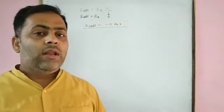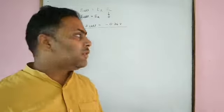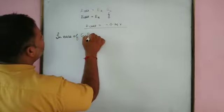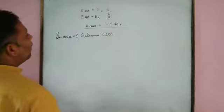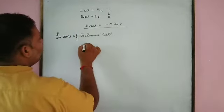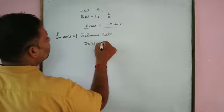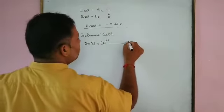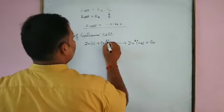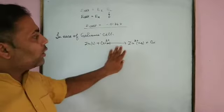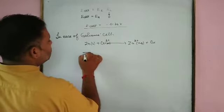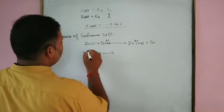In the case of the galvanic cell, the overall reaction is: Zn(s) + Cu²⁺(aq) → Zn²⁺(aq) + Cu(s). If we split this into anode and cathode half cell reactions, the anode half cell reaction is: Zn(s) → Zn²⁺(aq) + 2e⁻ (oxidation). The cathode half cell reaction is: Cu²⁺(aq) + 2e⁻ → Cu(s) (reduction).